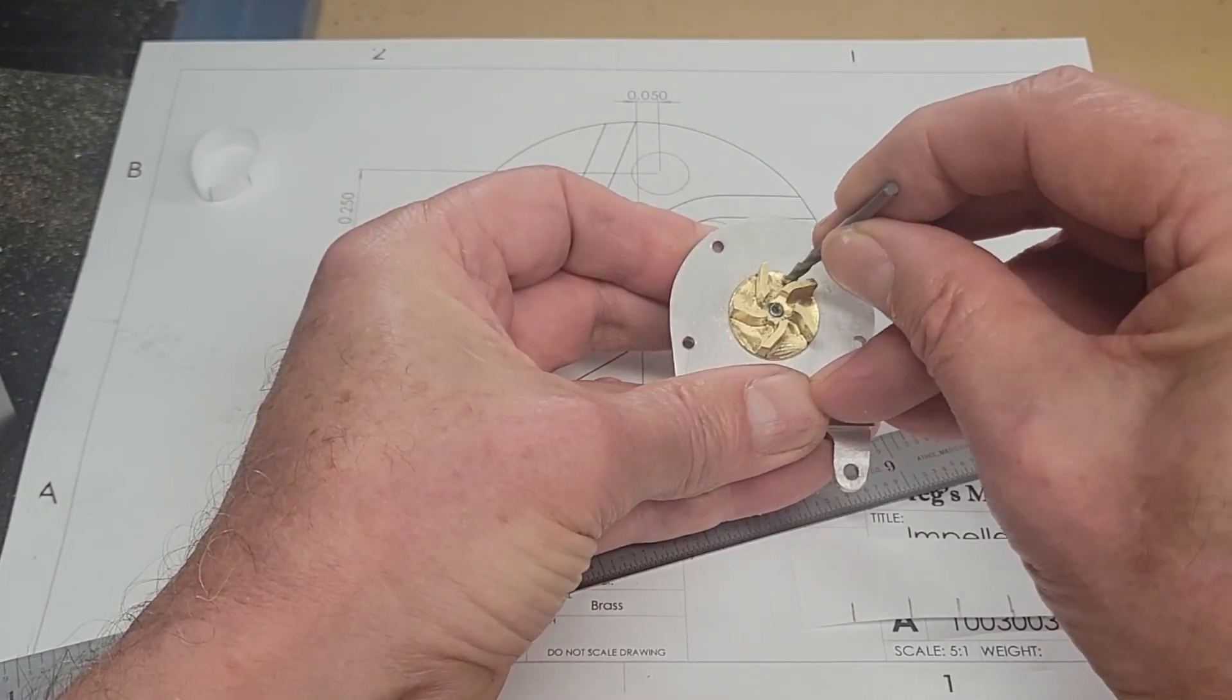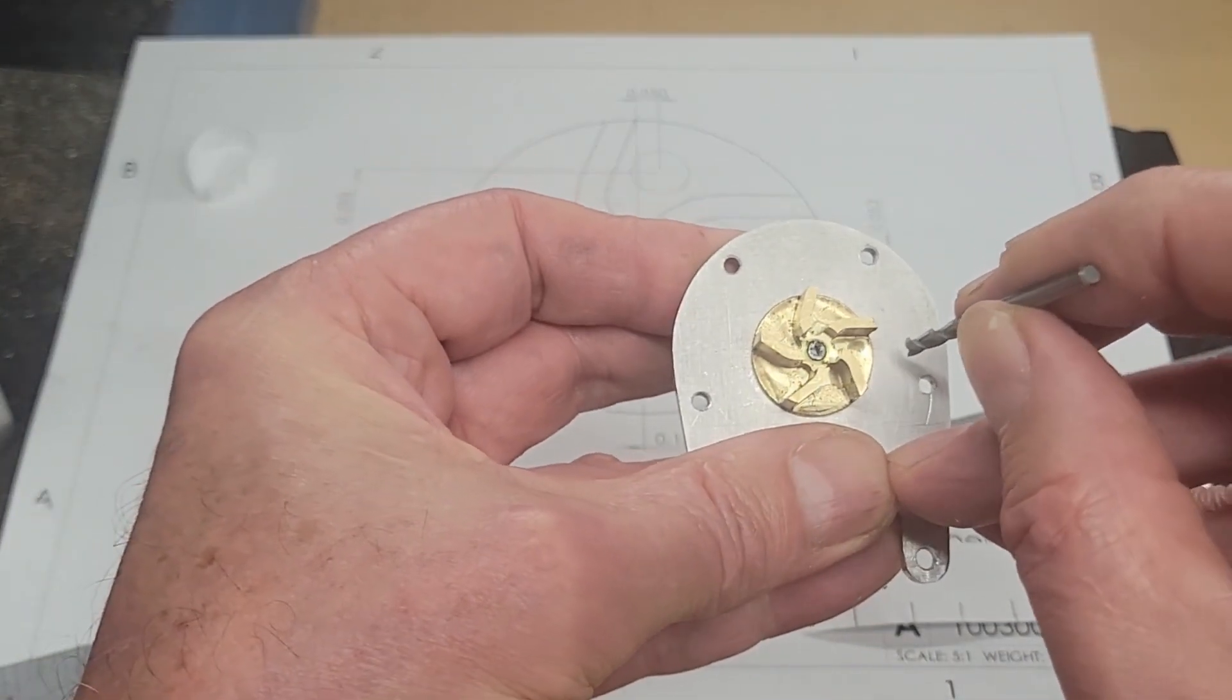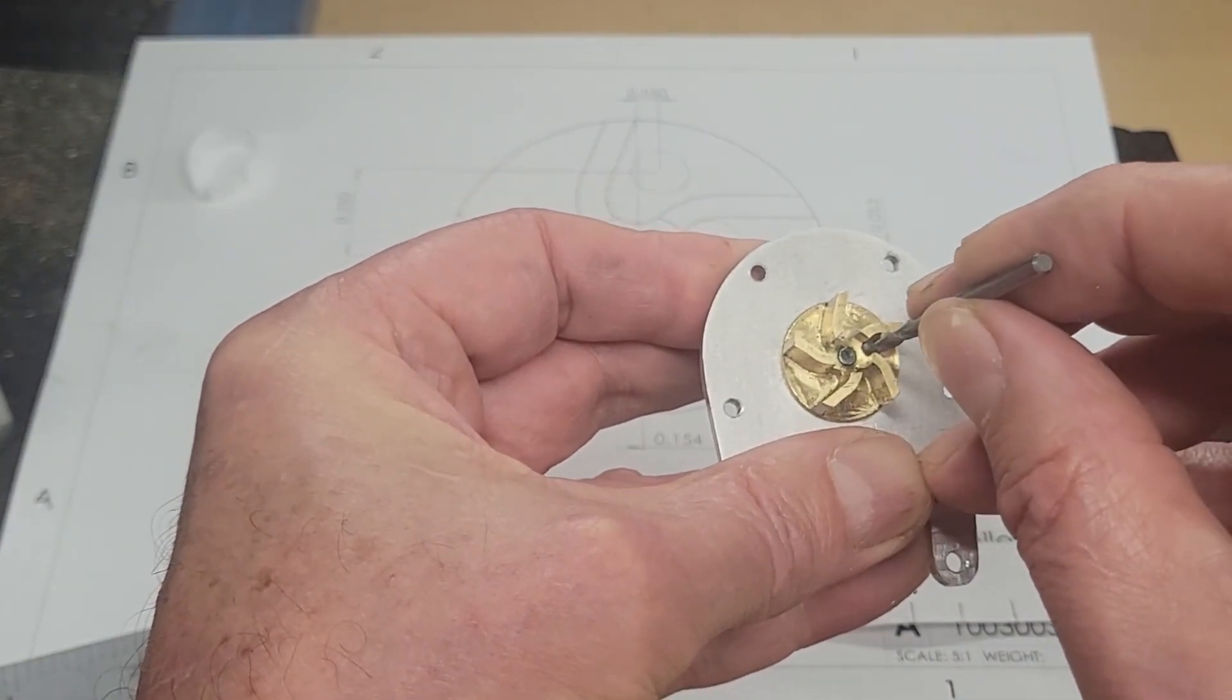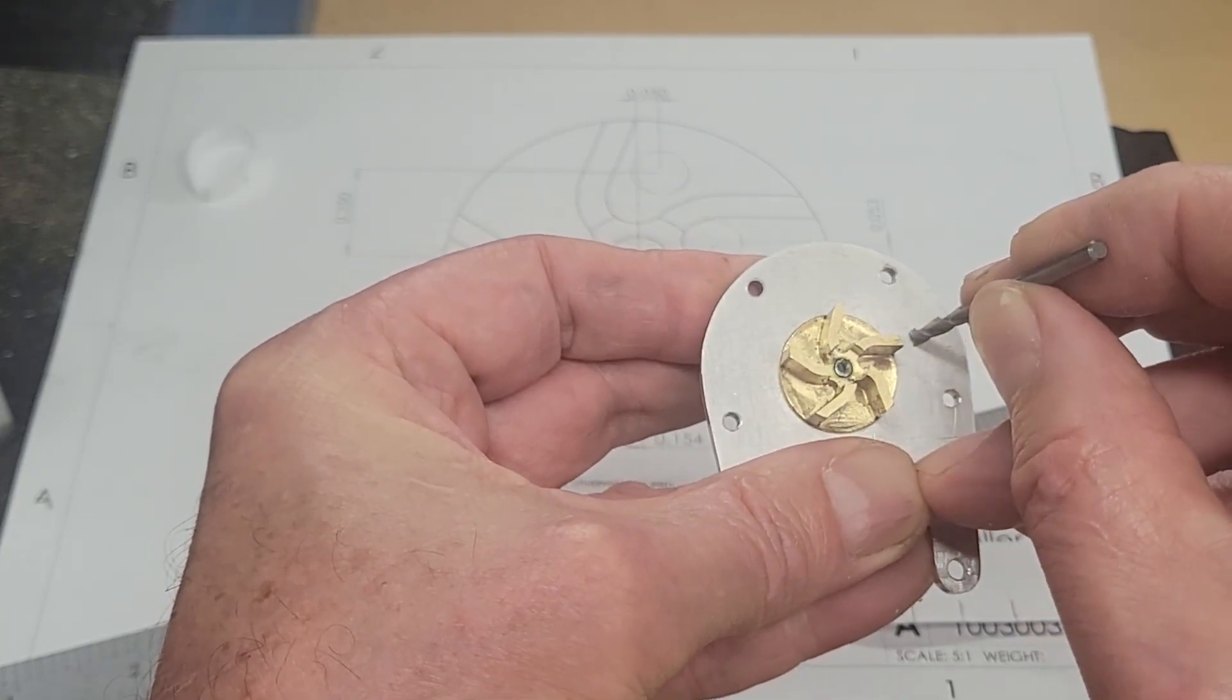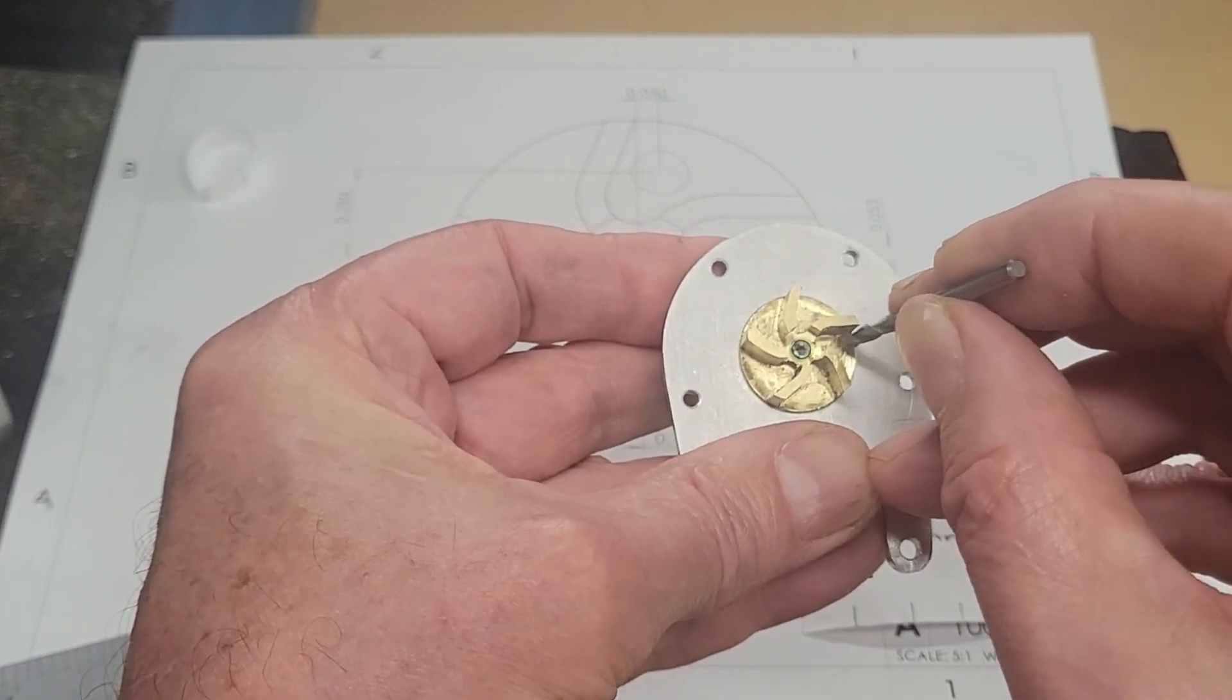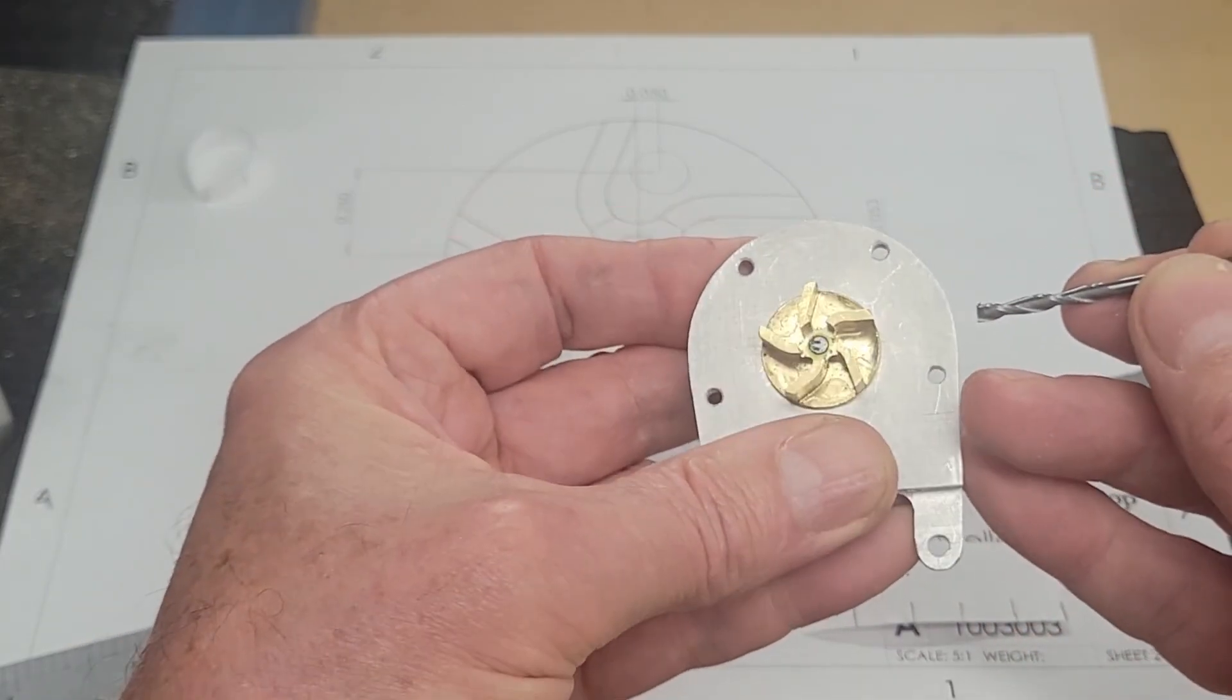One, two. Does that make sense? Bring it in, cut this one, bring it out, bring it up, cut this one, bring it out. Rotate it 72 degrees. Repeat, repeat, repeat. That's all it takes.